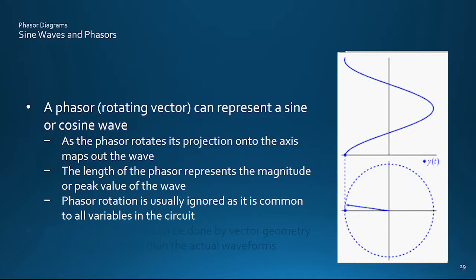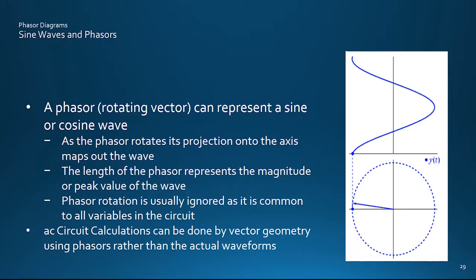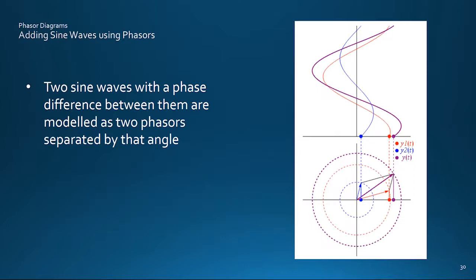Moreover, since all the sine waves being dealt with are at the same frequency, all the phasors representing them will be spinning around at the same rate, and so this common rotation can be ignored in the calculations, which saves having to put the paper on a turntable. So instead of trig or wiggly sine waves, we can work with straight line phasors.